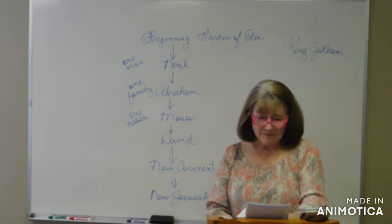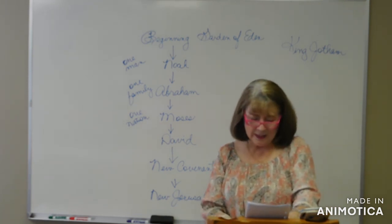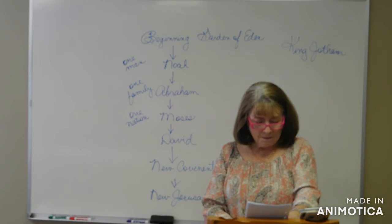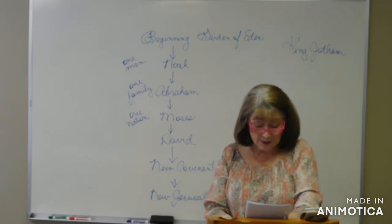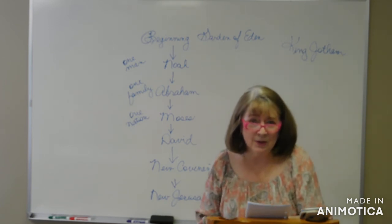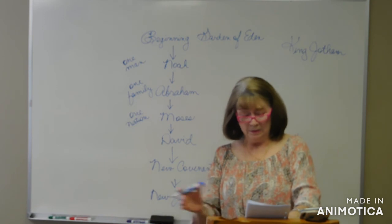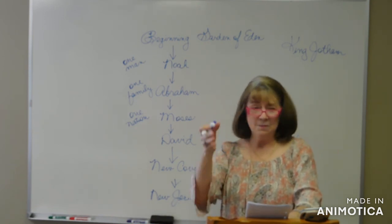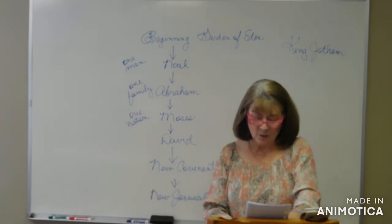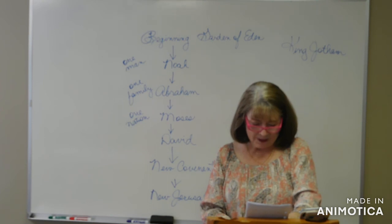In verse 7 he talks about the dependence on foreign wealth. Wow. Israel is full of silver and gold, there's no end to its treasures. Their land is full of war horses, there's no end to its chariots. They are dependent, their economy, are you listening to me, their economy is built on foreign wealth. You can see side by side the United States and Judea at this time, but we're not talking about the United States right now, we're talking about Judea.